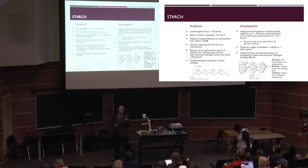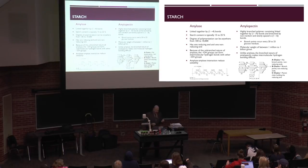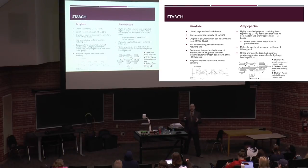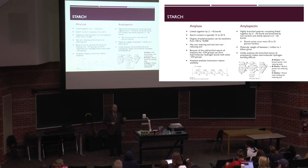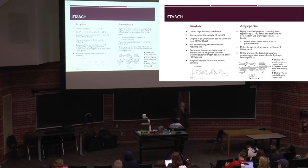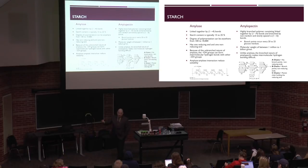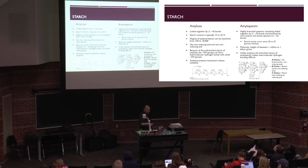Amylose has the alpha 1-4 bond, and that bond is broken down by amylase. The smallest structural unit that amylase can break a polysaccharide down to is maltose—the two-sugar unit. Maltose is then broken down at the brush border, which is the site where we go from disaccharide to monosaccharide, which can then be absorbed and enter the hepatic portal vein, going through systemic circulation to the liver.